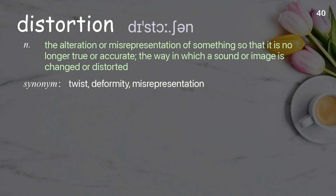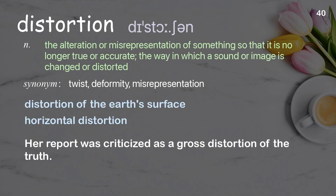Distortion: The alteration or misrepresentation of something so that it is no longer true or accurate; the way in which a sound or image is changed or distorted. Examples: Distortion of the earth's surface. Horizontal distortion. Her report was criticized as a gross distortion of the truth.